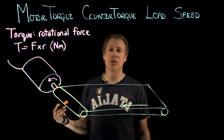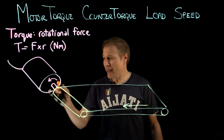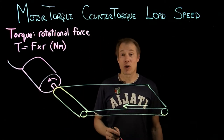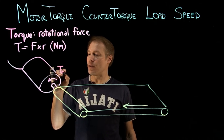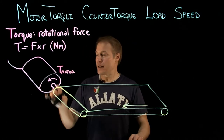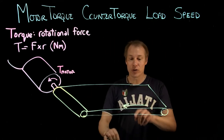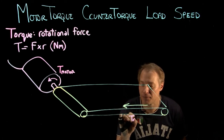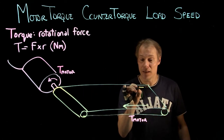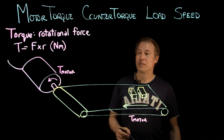First, let's look at the motor itself. A motor converts electrical energy into mechanical energy. I have an arrow drawn for the motor torque, which in this case is in a counterclockwise direction. That arrow represents the torque of the motor, and as you can see, it's pushing the conveyor belt along in the same direction — so the conveyor belt movement also represents the motor torque.